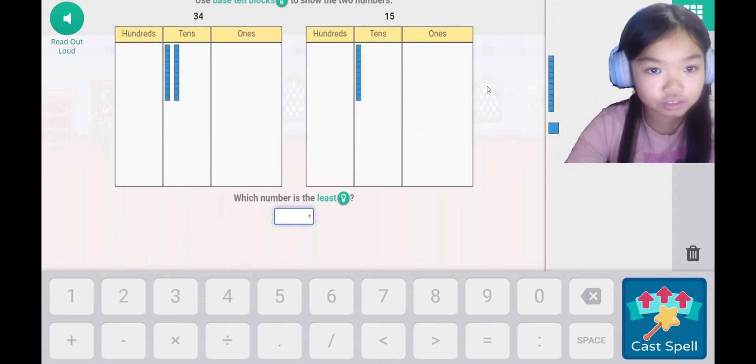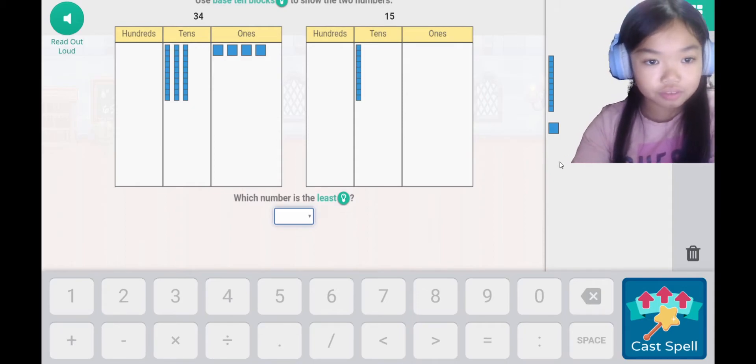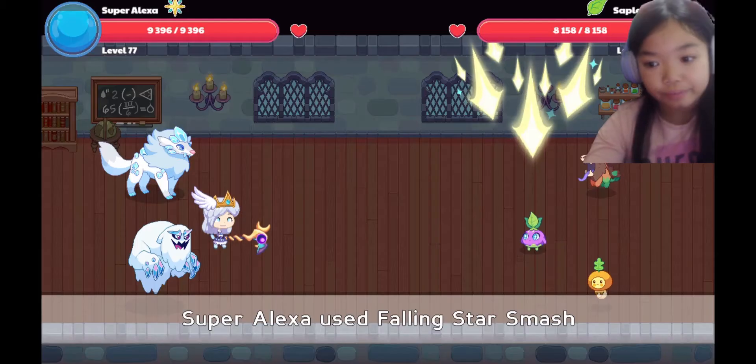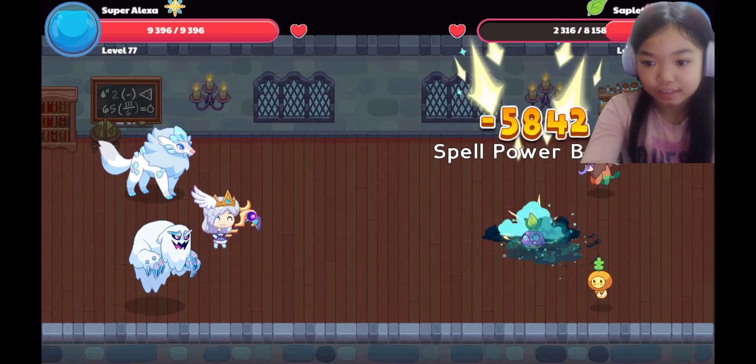Use base 10 blocks to show the two numbers. So I got 3 tens and 4 ones. Now for 15, I got 5 ones now. 1, 2, 3, 4, 5. Which number is the least? 15. Yay.